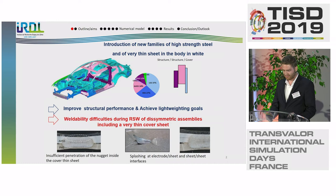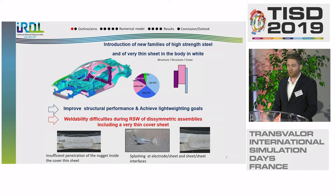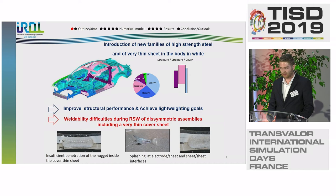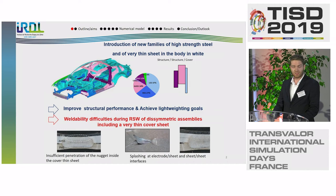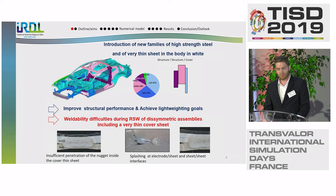Some precision about the outline and aims of this work. In automotive industry, to improve the structural performance and achieve light-weighting goals, new families of advanced high-strength steel and very thin sheets are introduced in the design of body-in-white. We can find on the body-in-white disymmetric assemblies including sheets of different steels, different thicknesses, and different coatings. Some combinations including very thin sheets cause weldability problems during the RSW process, with mainly an insufficient penetration of the nugget inside the thin sheets.